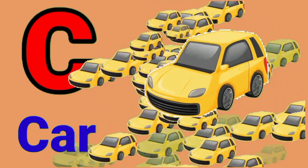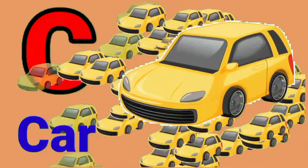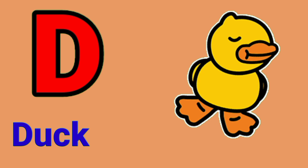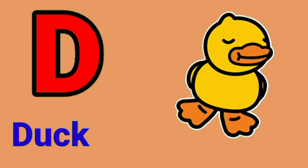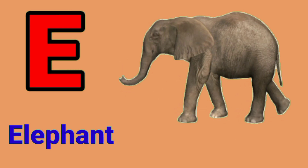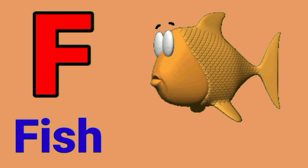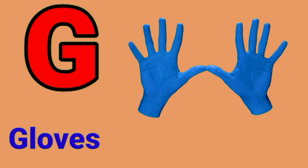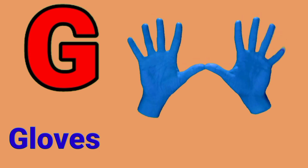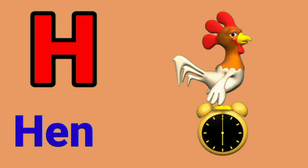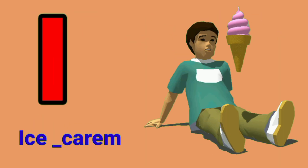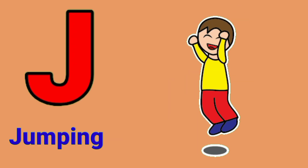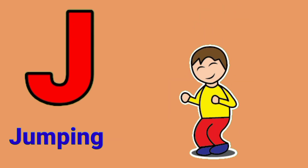C for car. D for duck. E for elephant. F for fish. G for gloves. H for hand. I for ice cream. J for jumping.